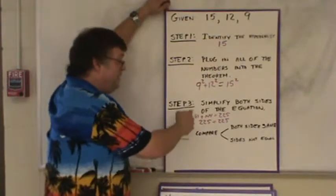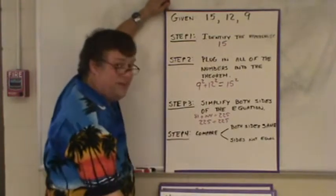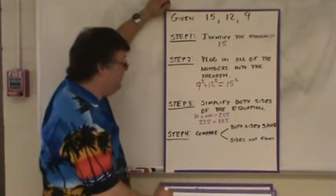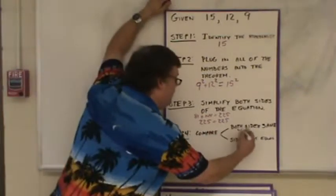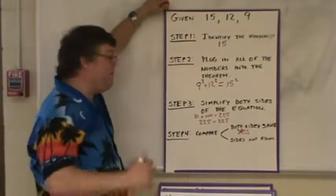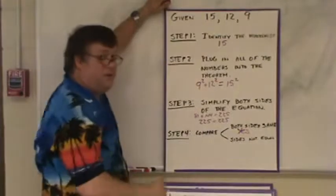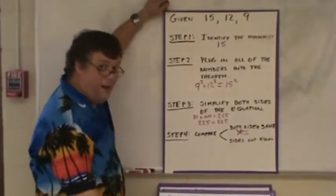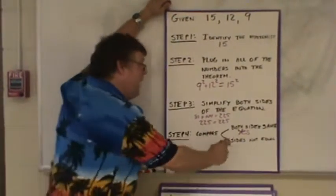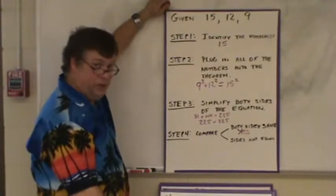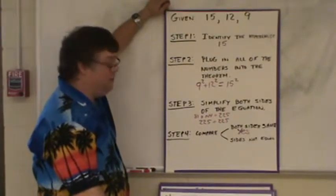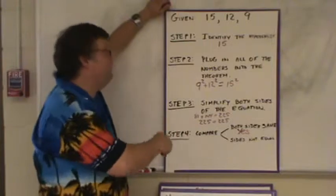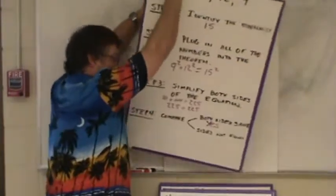Last step is to compare. Are both sides the same? In this case, yes, they are. If they're both the same, then yes, these three numbers, these three lengths, do form a right triangle. If they did not, my answer would be no. They do not form a right triangle. But they are the same, so we do indeed have a right triangle there.